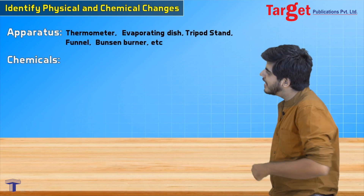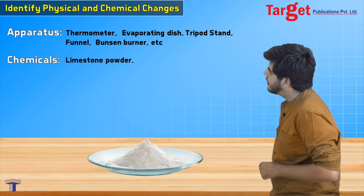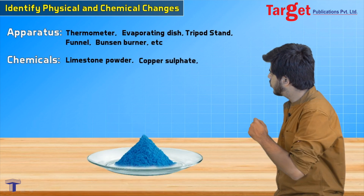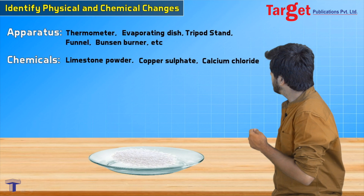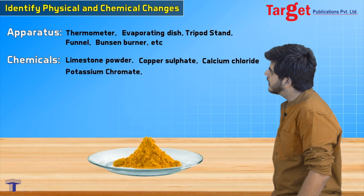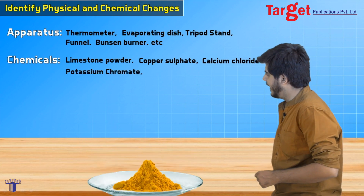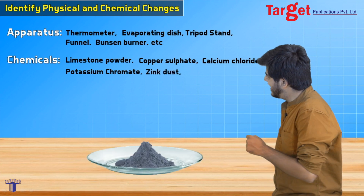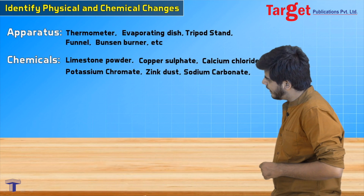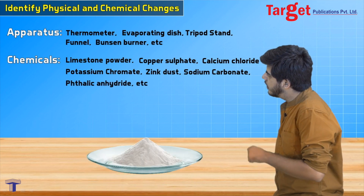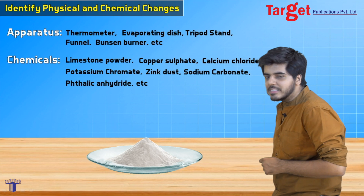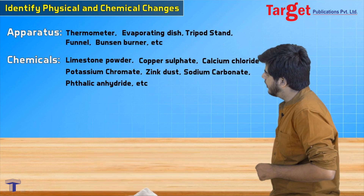Now let us see what chemicals we require. The first chemical is limestone powder. The second is copper sulphate. The third is calcium chloride. The fourth is potassium chromate. The next is zinc dust. Then sodium carbonate. And finally, phthalic anhydrous.